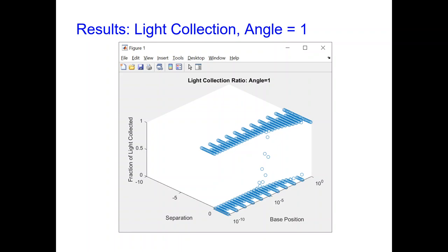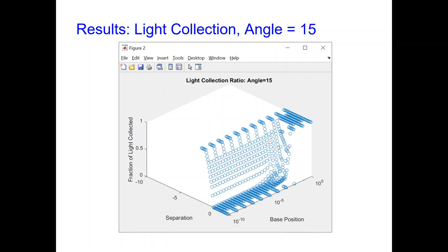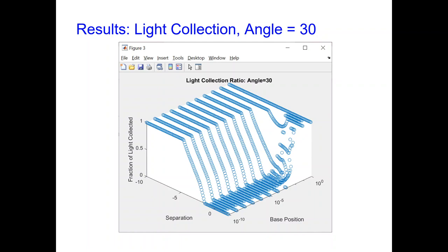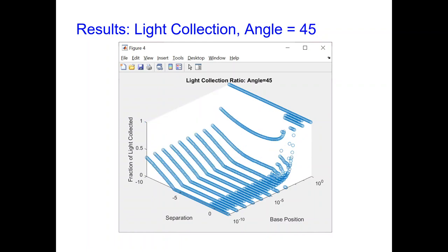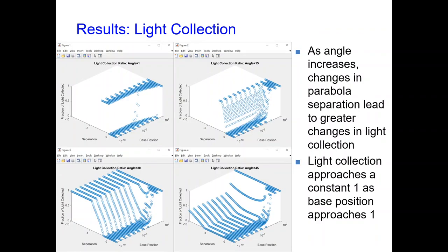The x and y axes will be the base position and parabola separation, while the z axis is the output variable being tested. Each angle will have its own graph. This graph shows the light collection for angles of 1, 15, 30, and 45 degrees — the maximum angle tested. All four graphs look pretty similar; however, as the angle increases, changes in parabola separation lead to greater changes in light collection, so the graphs appear more stretched out. Additionally, the light collection approaches a constant value of 1 as the base position approaches 1, which makes sense because a base position of 1 corresponds to a flat concentrator similar to a solar panel.